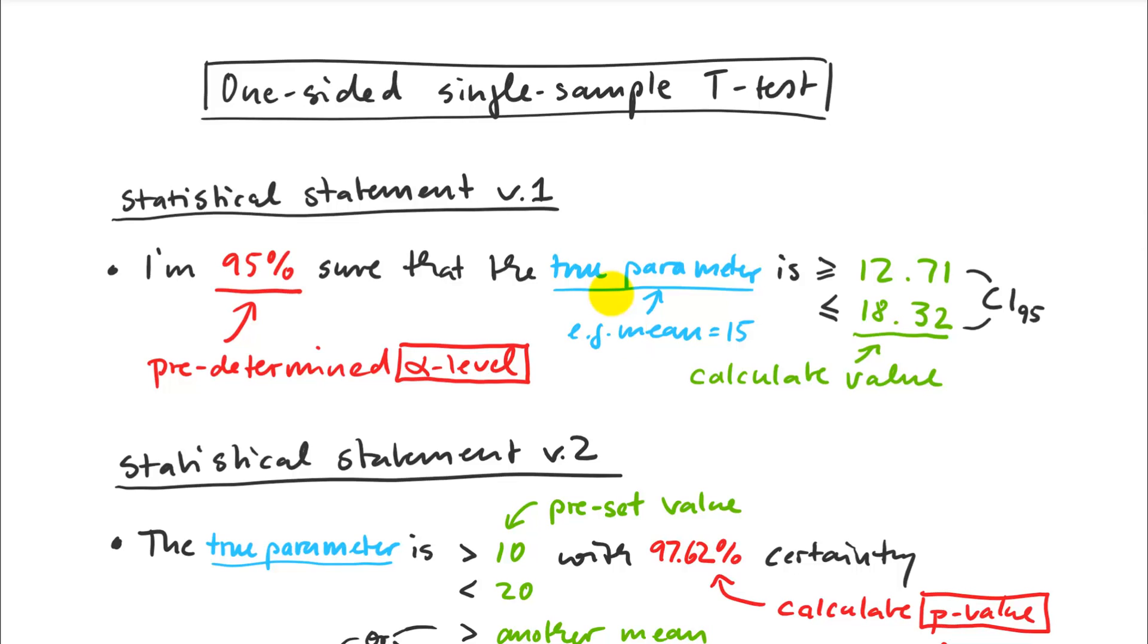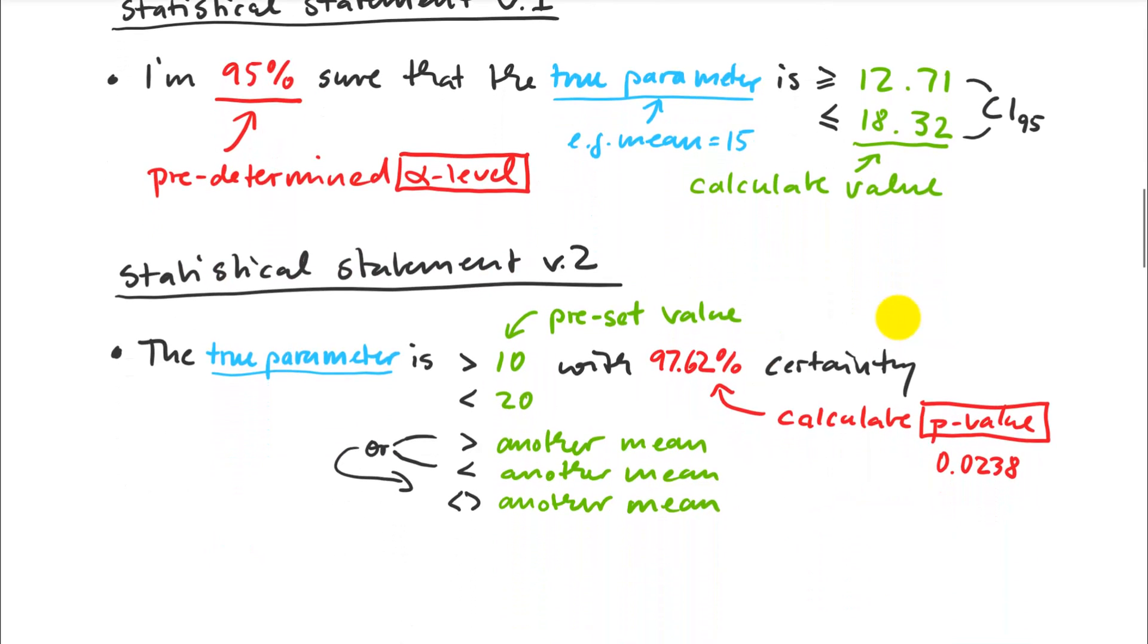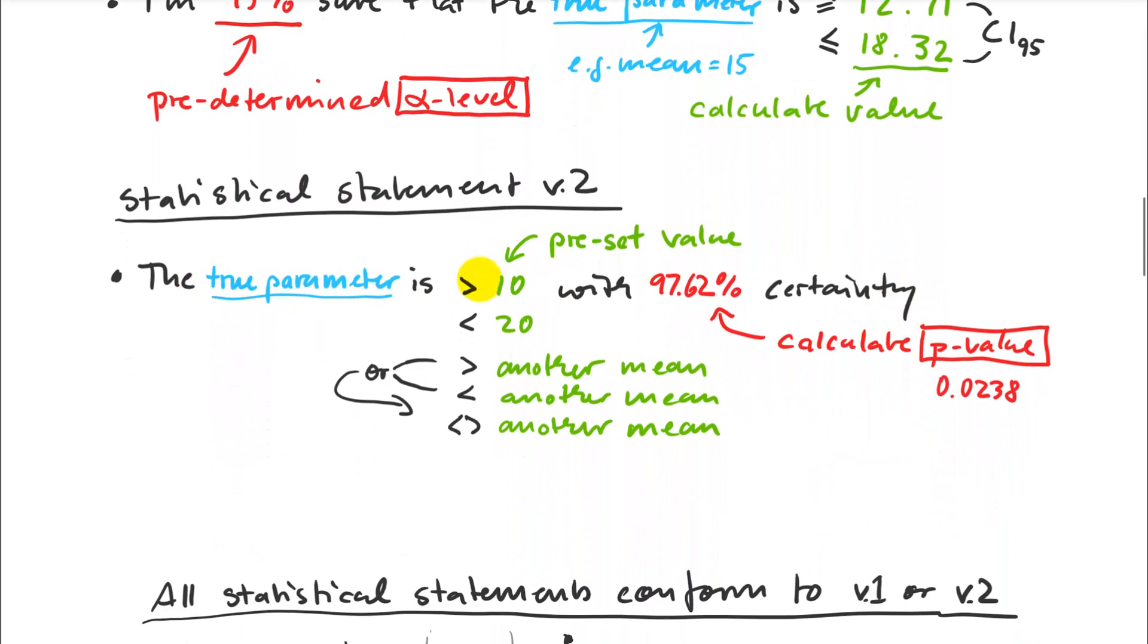Now, there is another version of this, where I flip what's predetermined. What I can also ask, if I have a particular interest in a particular threshold, for example, instead of 12.71 which I calculated, I'm really interested in whether something performs better than, I don't know, 10 kilograms per hectare, or any threshold that may be of practical interest or commercial interest. I can also make statements that go like this. The true parameter is larger than 10 with a 97.62% certainty. So I can set that side of the equation first, and then calculate the p-value that I predetermined in the other statement. If you do that, if you're asking this question slightly differently, and reverse the order of that calculation, then you actually get a t-test.